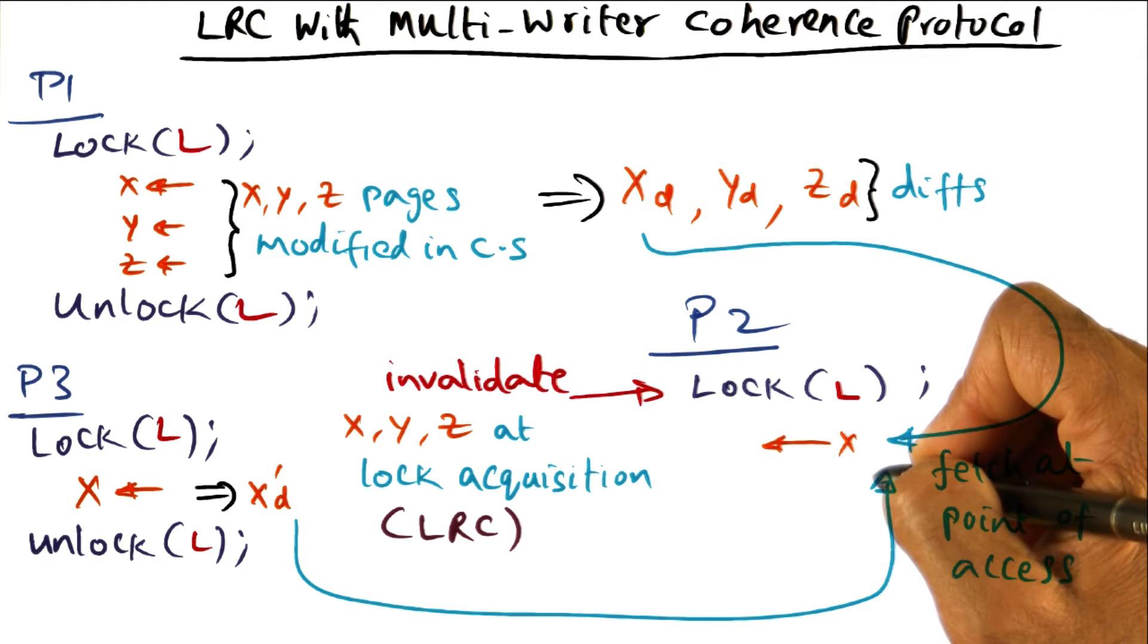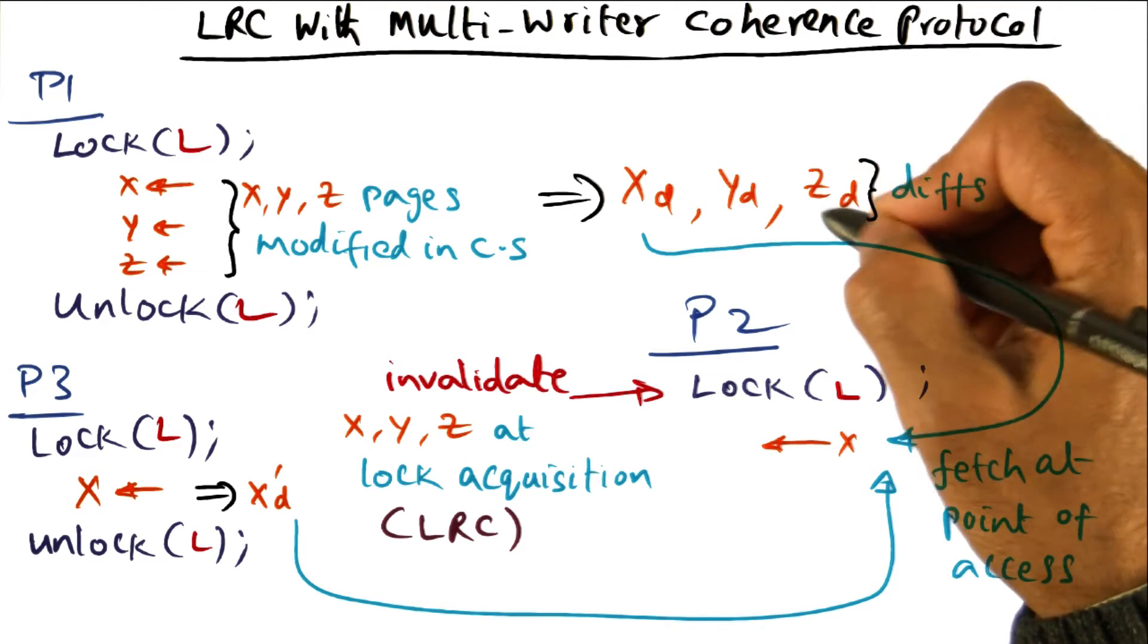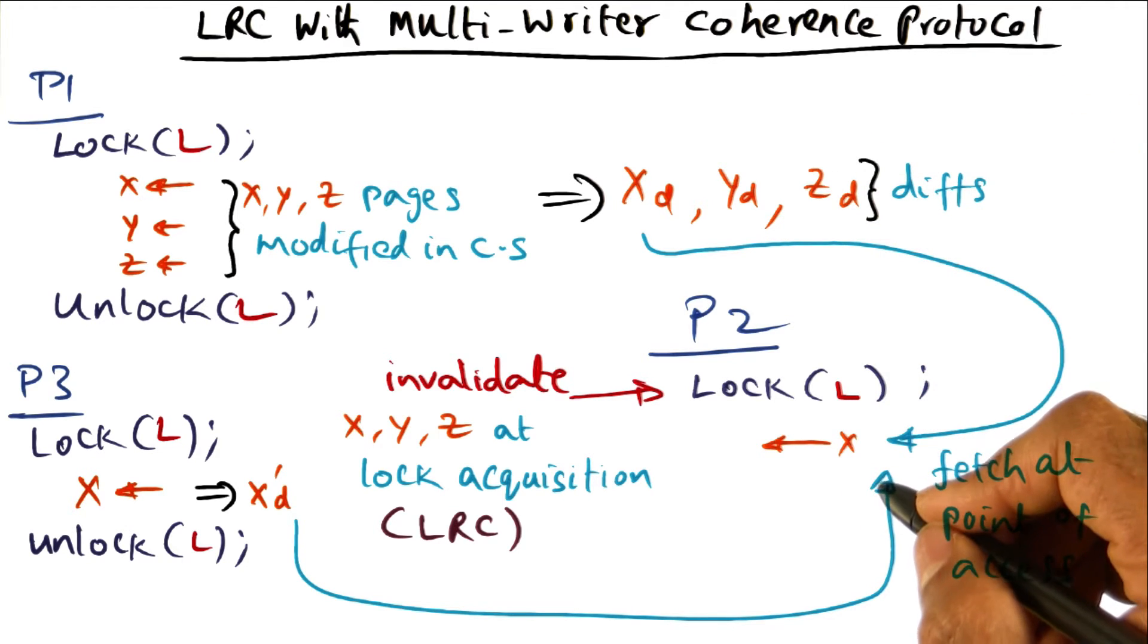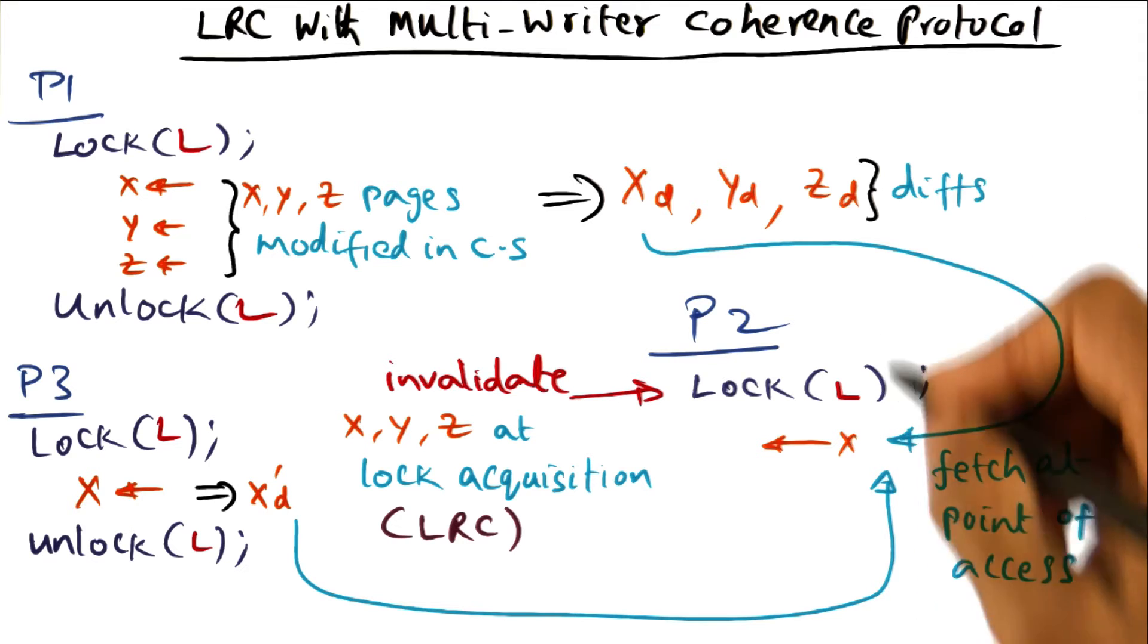oh, I know that z was modified by the previous lock holder. ZD is the diff. I know where to find it. I'll bring the original copy of z from the owner of z and apply the diffs to it before letting P2 access z.